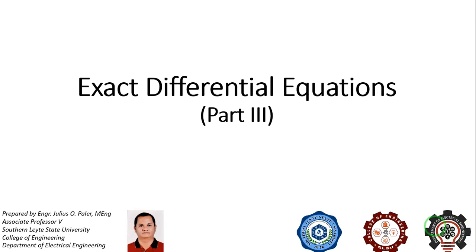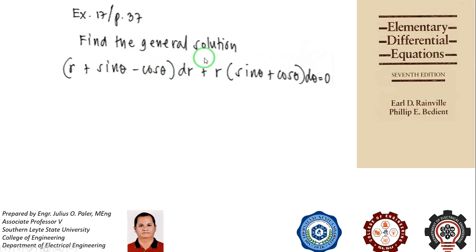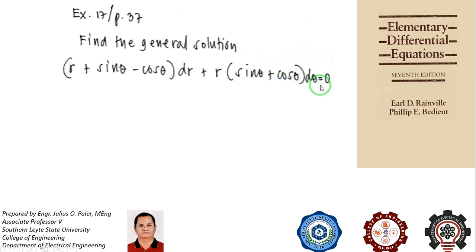Our second example is Exercise 17, page 37 of our book. We are asked to find the general solution of the differential equation: (r + sinθ - cosθ)dr + r(sinθ + cosθ)dθ = 0.